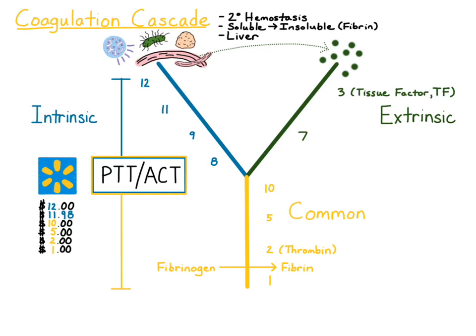PTT stands for partial thromboplastin time, and ACT stands for activated clotting time. The test used to evaluate the extrinsic and common pathway is the PT, or prothrombin time. This test evaluates how long it takes a clot to form with activation of the extrinsic pathway — the time it takes to go from factor 7, 10, 5, 2, to 1. Tissue factor is actually added to the sample, so it doesn't evaluate tissue factor or factor 3. PT is also measured off of citrated plasma from a blue top tube.